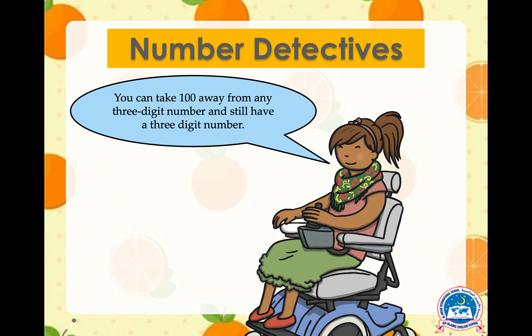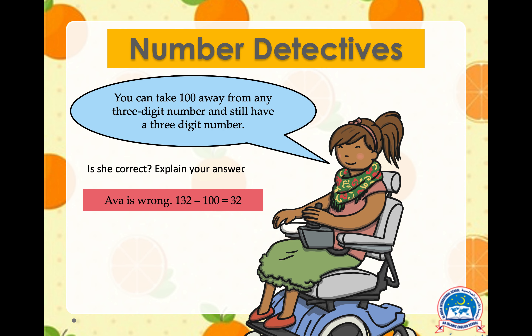You can take 100 away from any three-digit number and still have a three-digit number — do you think that is correct? If you've guessed that it's not correct, well done! Because if you take 100 away from 132, we are only left with 32, and that is a two-digit number, not a three-digit number. So Ava is wrong.